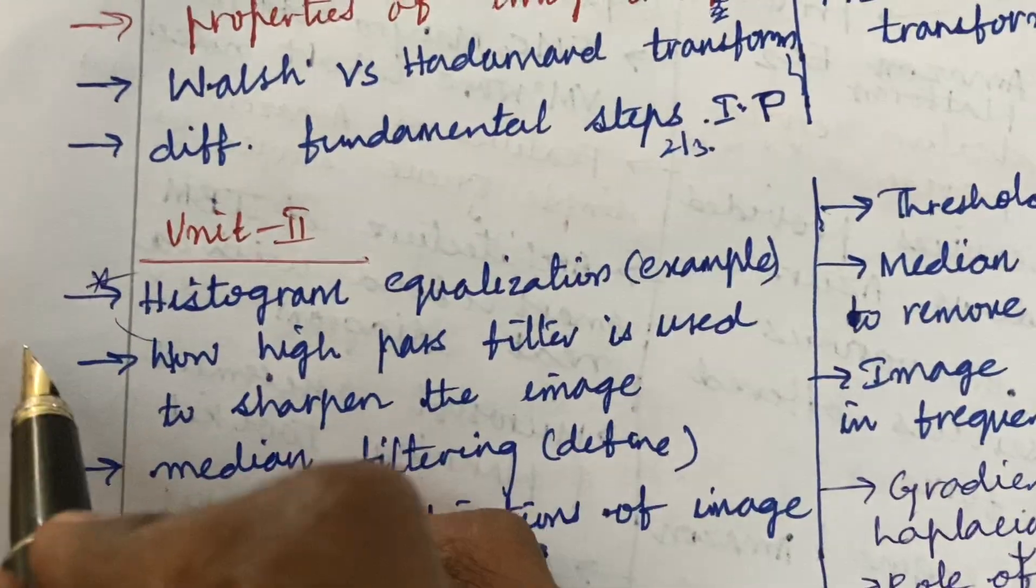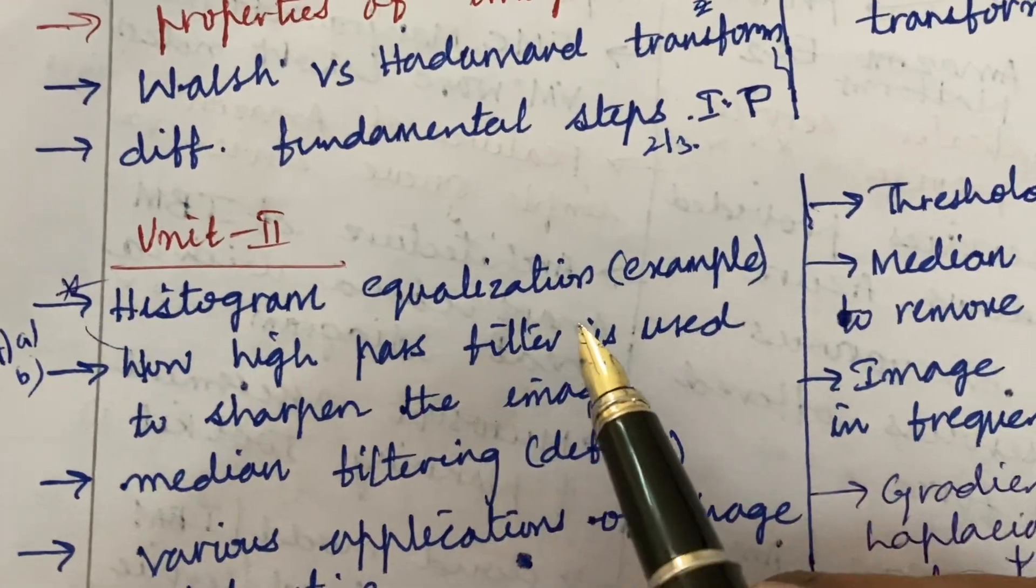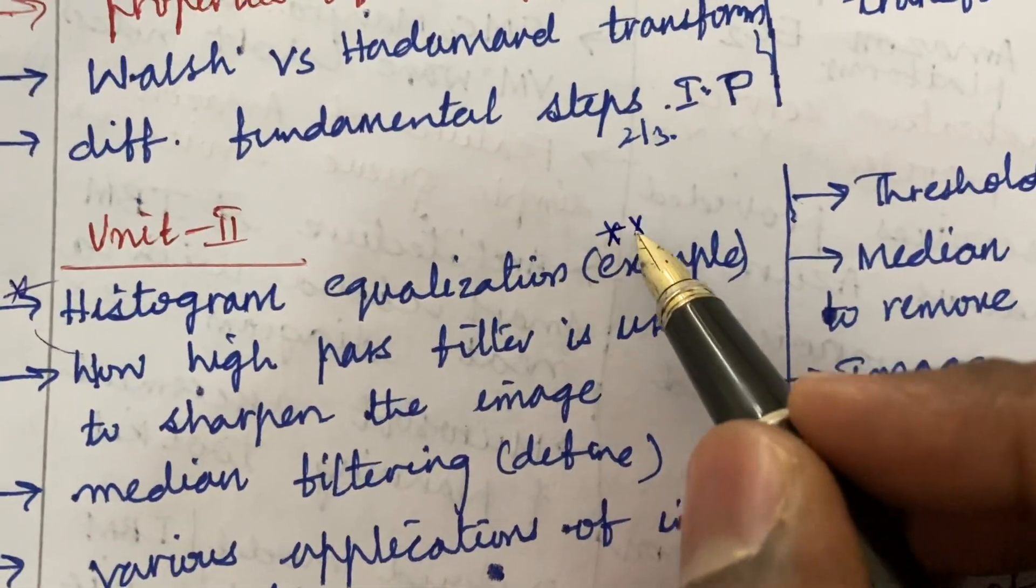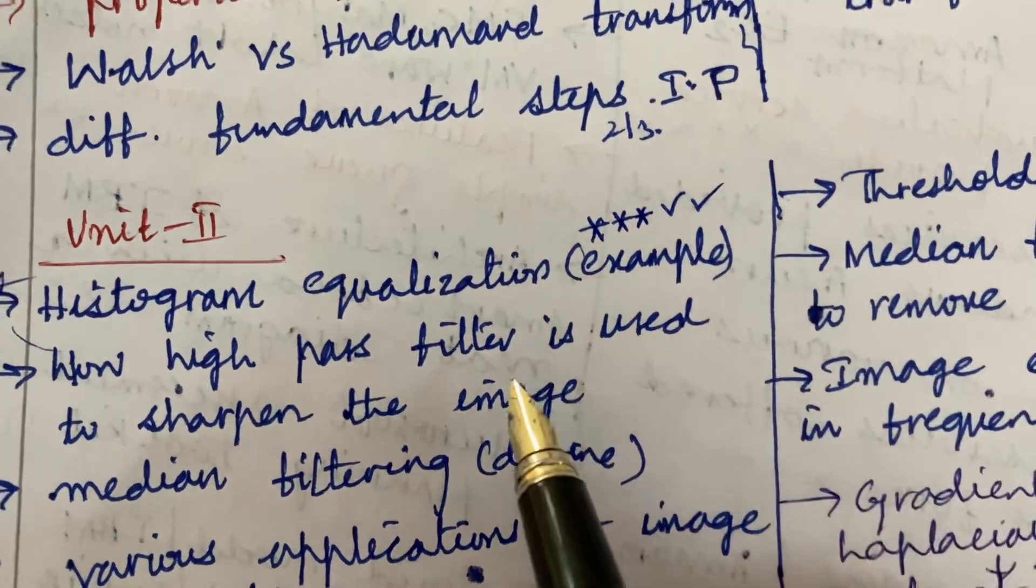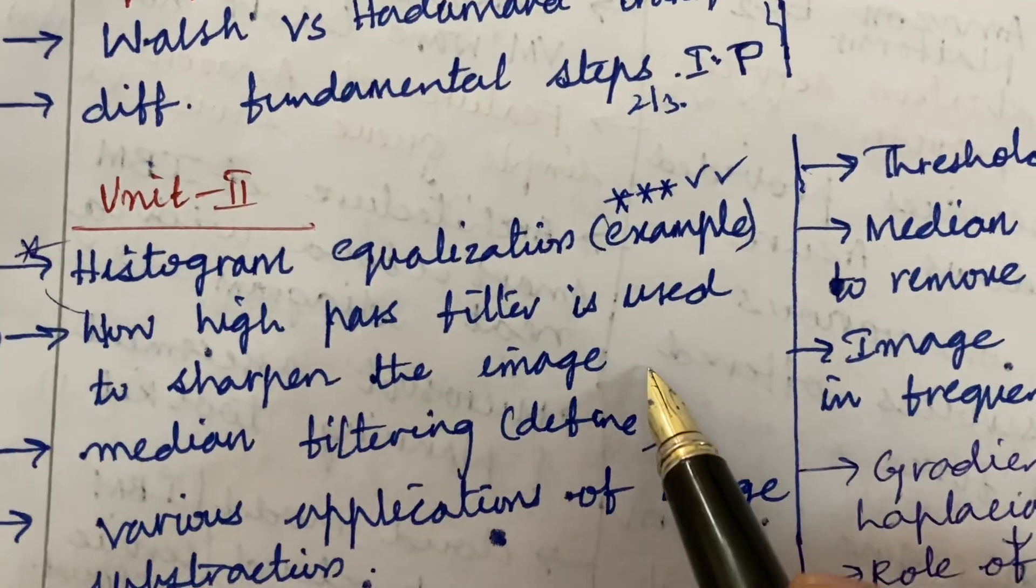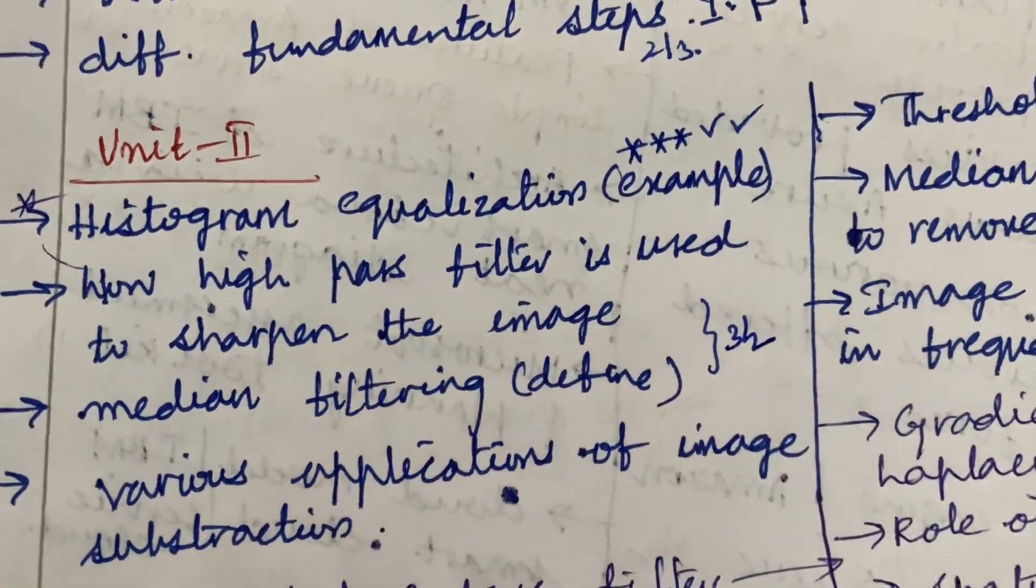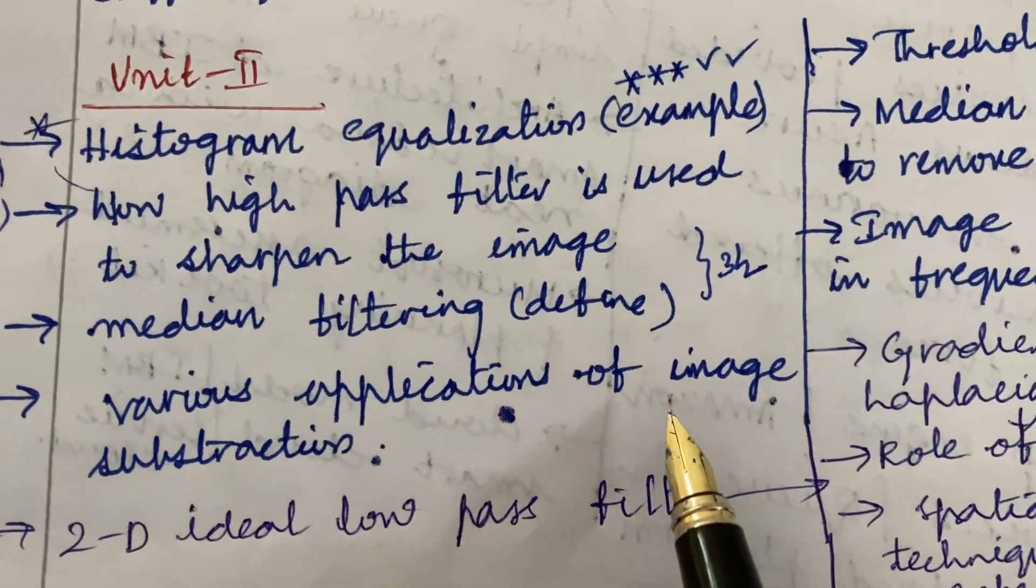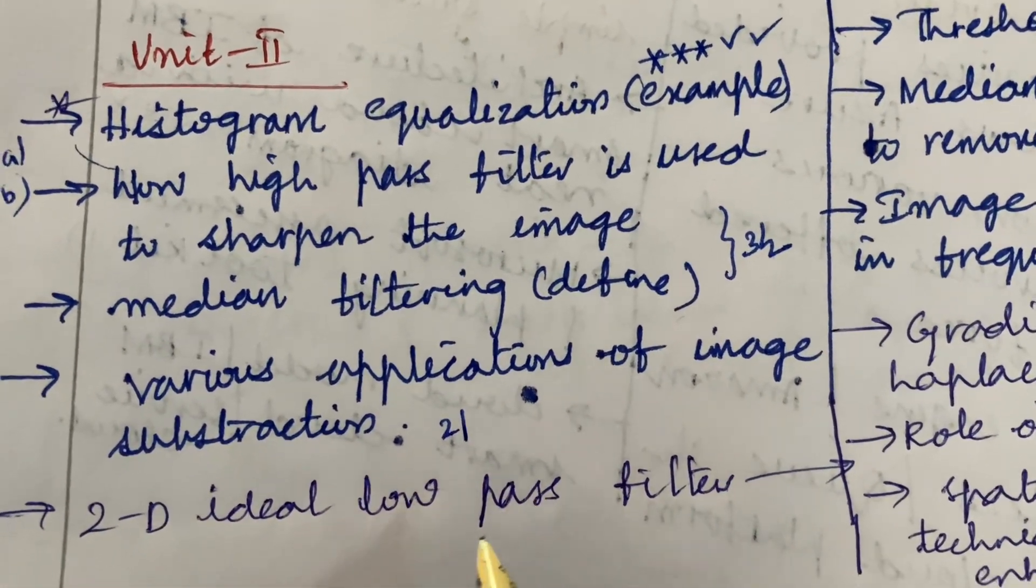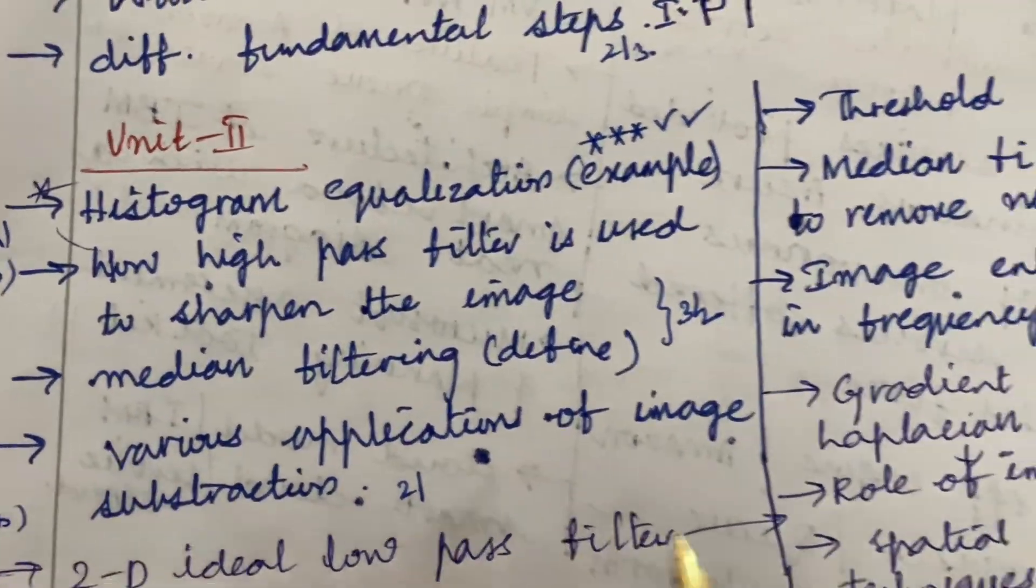Let's look into the 4A as well as 4B. Now from unit 2. Unit 2 is all about histogram equalization, said to be a topmost and gunshot question for sure this time. Along with an example, how high pass filter is used to sharpen an image. Median filtering definition is said to be a 3 mark or 2 mark question. Various applications of image subtraction is also a 2 mark question and 2D ideal low pass filter may be a B question, I mean 4AB.